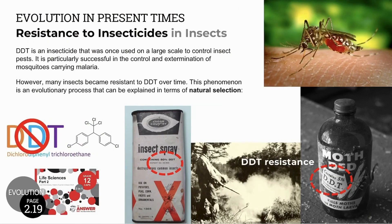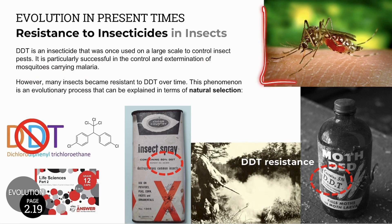The first example we study is resistance of insects to insecticides. A very common insecticide used all over the world is DDT. DDT was very effective in controlling insect pests, particularly mosquitoes that spread malaria. Over time, however, many insects became resistant to DDT.